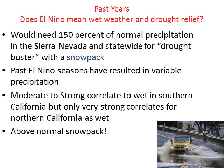Moderate to strong El Niños correlate very well, but only to Southern California. Keep in mind that with all this precipitation, we still need above-normal snowpack. Even if we get heavy rain or rain on snow across the state, we still need to build that snowpack so that in April and May we have sufficient runoff to fill up the reservoirs.